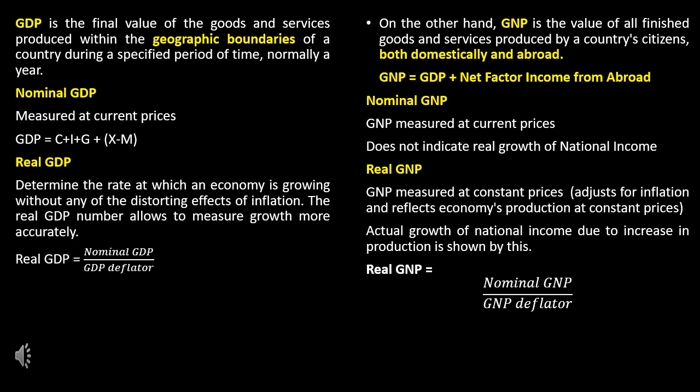GNP is the value of all final goods and services produced by a country's citizens, both domestically and abroad. Therefore, GNP is equal to GDP plus net factor income from abroad.